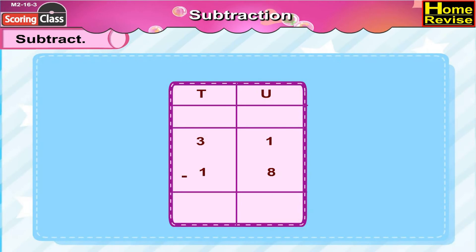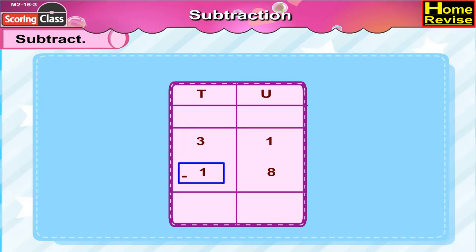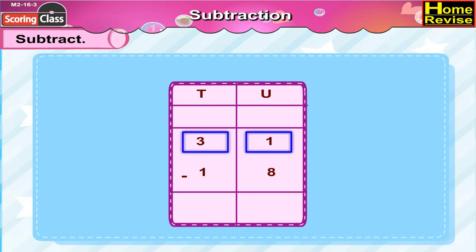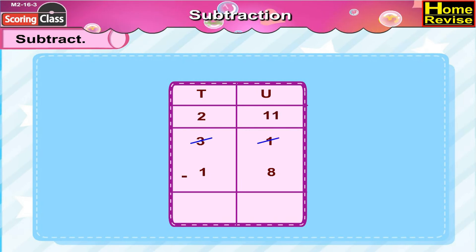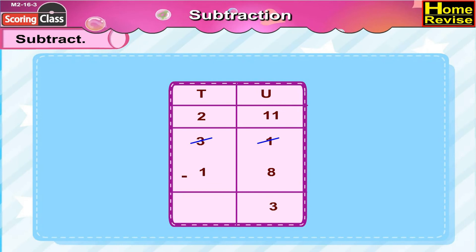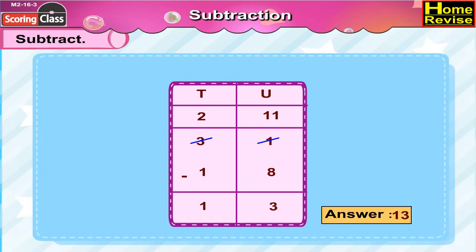31 minus 18 — that is 3 tenths 1 unit minus 1 ten 8 units. Since 8 cannot be subtracted from 1, we rewrite 3 tenths 1 unit as 2 tenths 11 units. 11 minus 8 is 3, and 2 minus 1 is 1, so 31 minus 18 is 13.